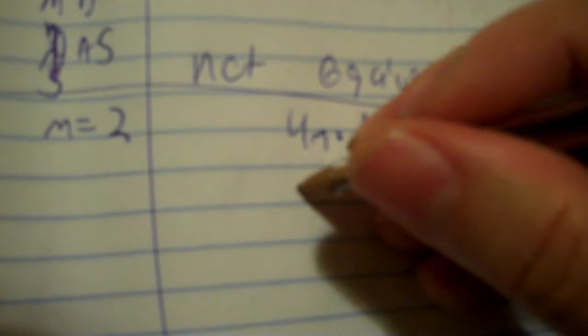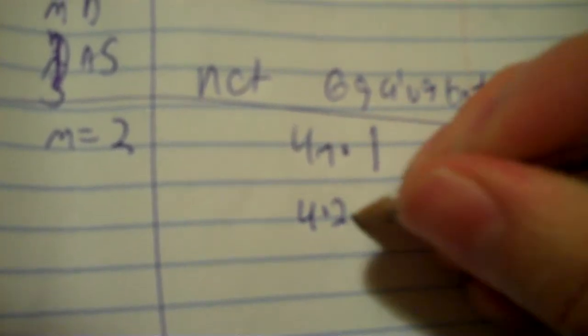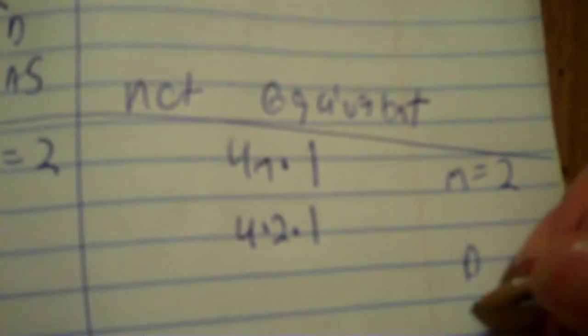Next: four m versus four m times one. Let m equal two: four times two is eight. Other side: four times two times one is also eight. Eight equals eight — these are equivalent.